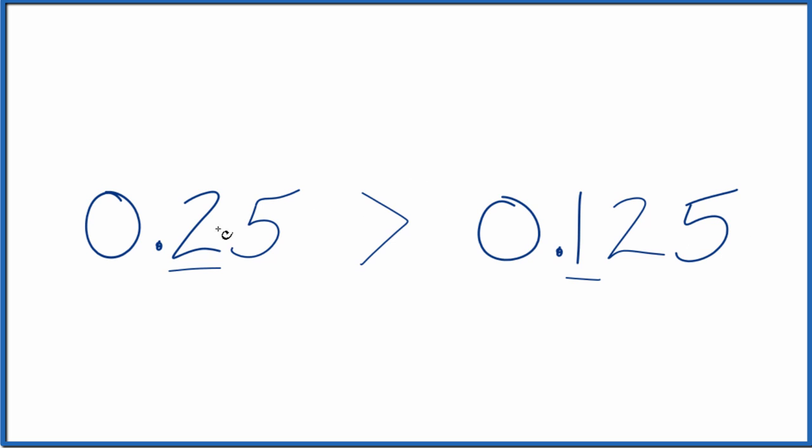Another way to look at it is you could consider that after the 5 here in the 0.25, that there's a zero. It doesn't change the value, but now you can kind of see that 0.250, that's bigger than 0.125. That's another way to do it.